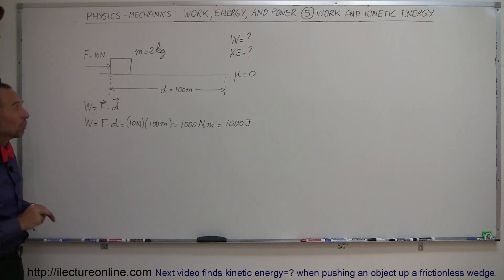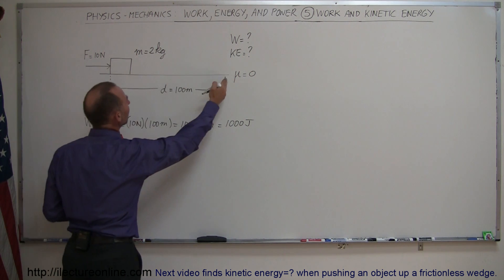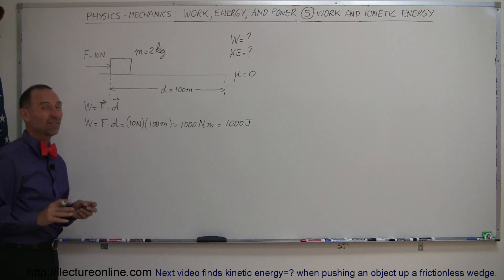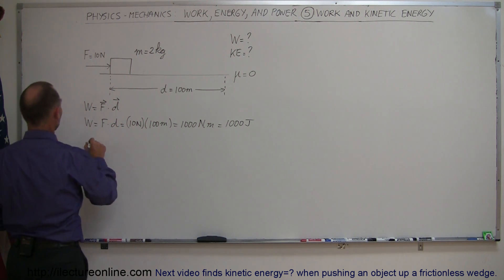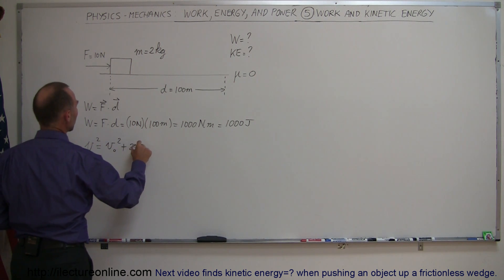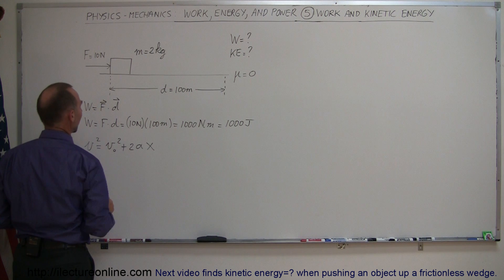Alright, another thing we can do, we're going to show in just a moment that that's indeed the case. Another thing we can do is figure out how fast the object will be moving when it reaches that distance. Since we don't know how long it's going to take, we can use the equation that says v squared is equal to v initial squared plus 2 times acceleration times x.